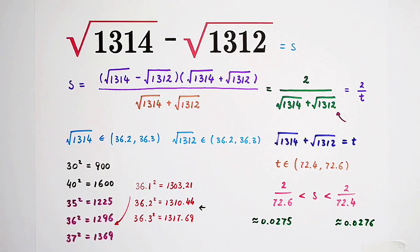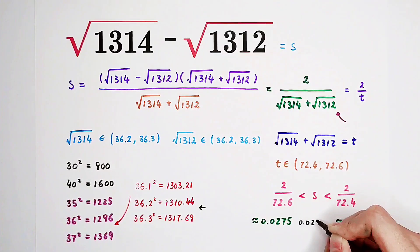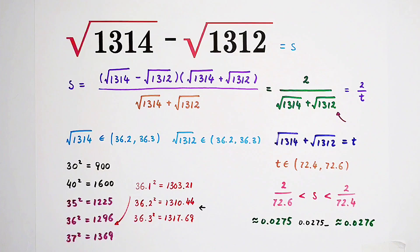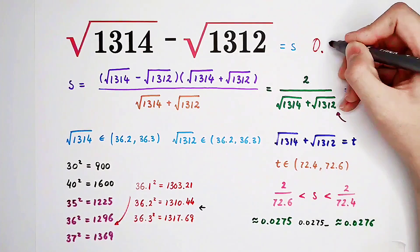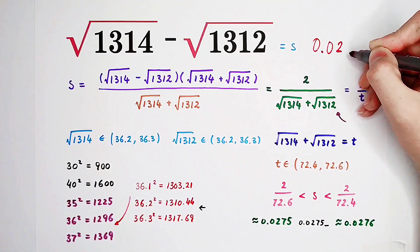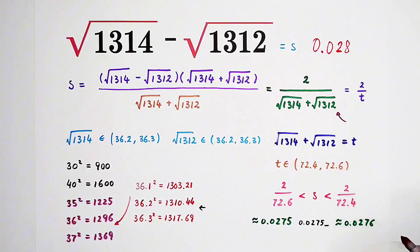And now, you can see s is between these two guys. So, s should be 0.0275 and something. So, the approximation of s is very easy. It is just 0.028. Very good. Did you get it? Did you get the trick? Give me a thumbs up for more wonderful questions. And we'll see you next time. Bye-bye!